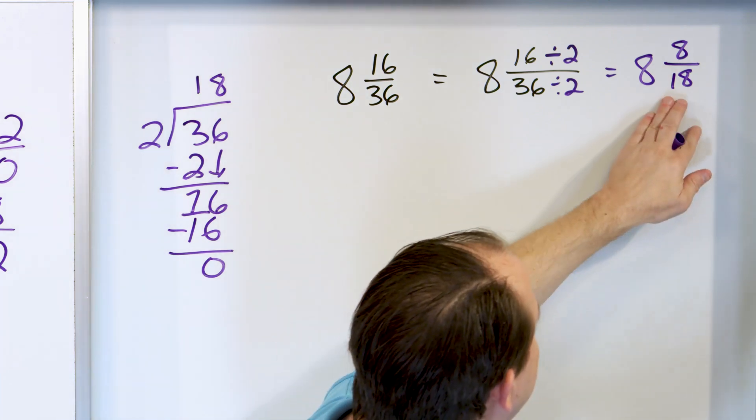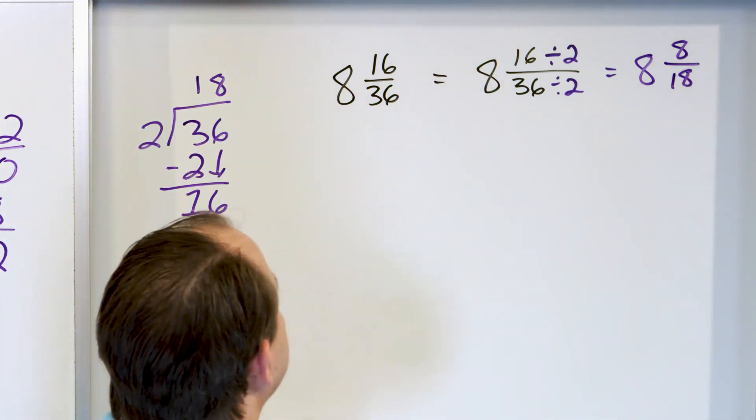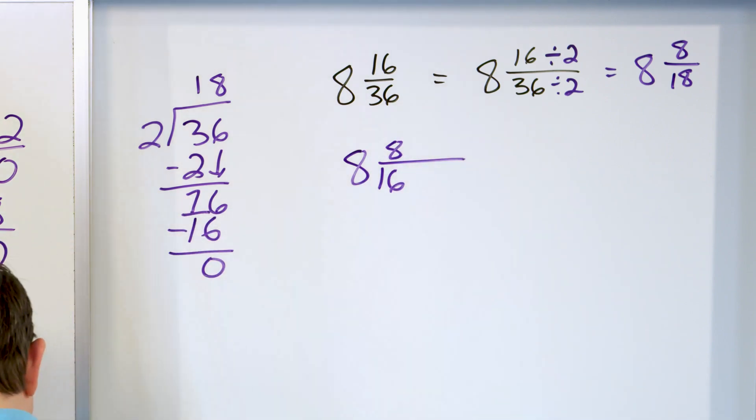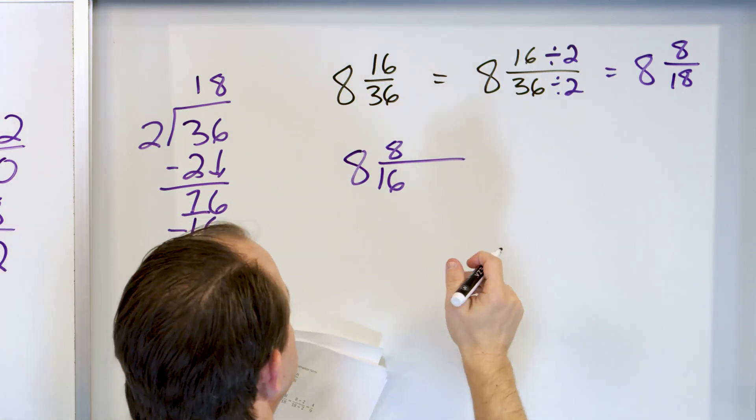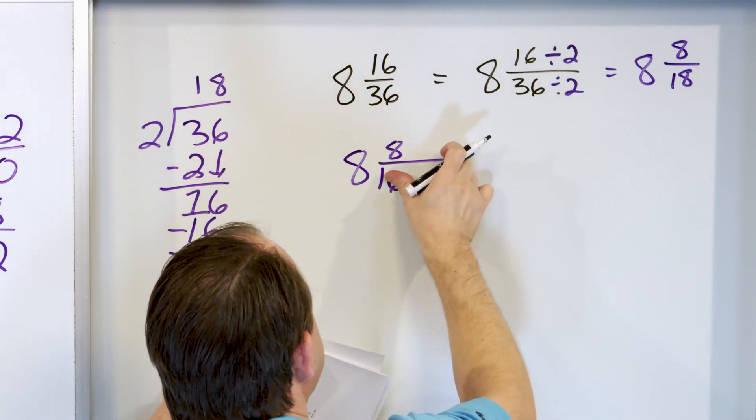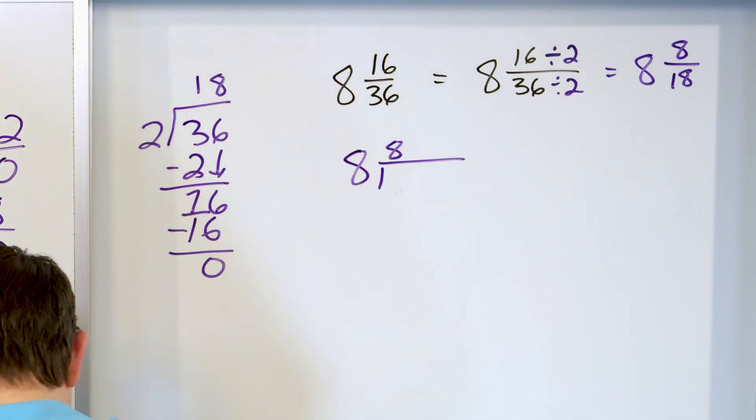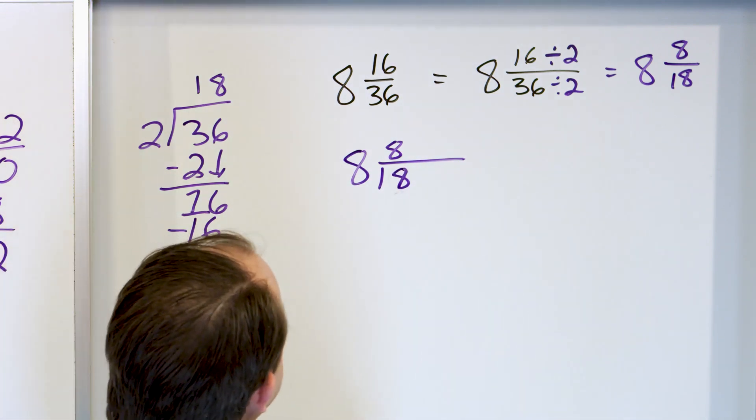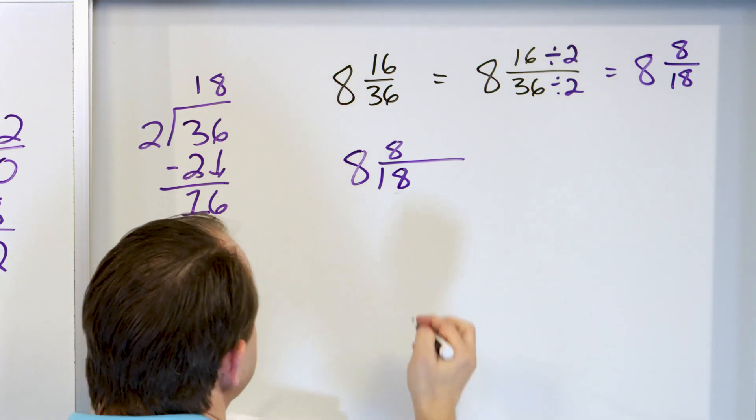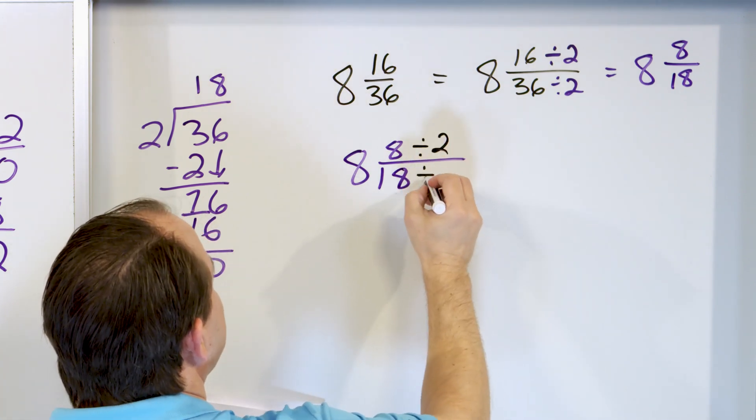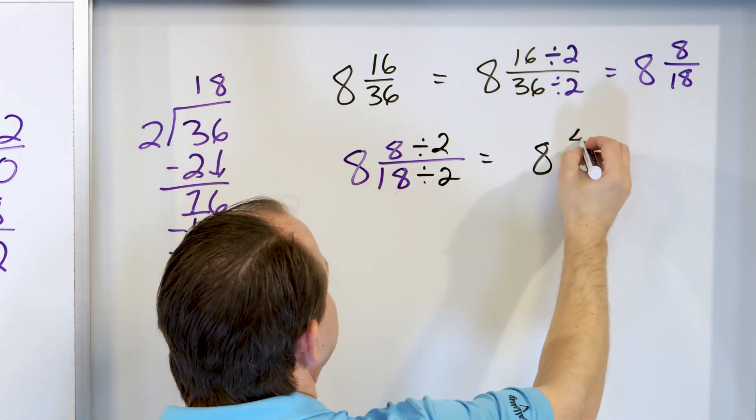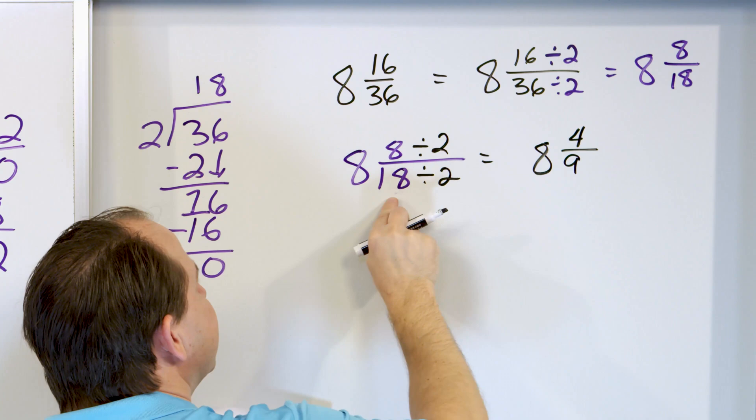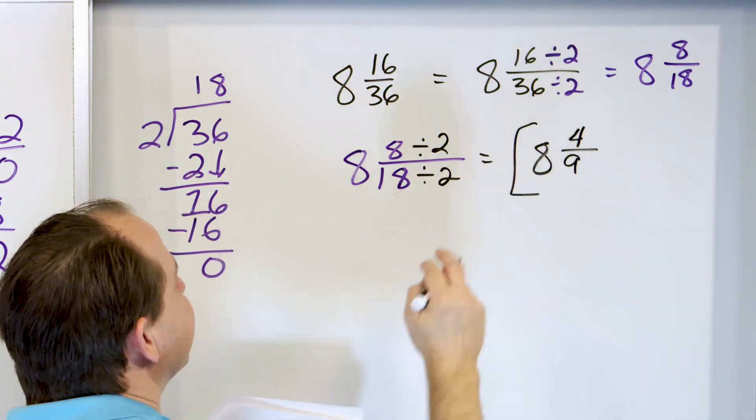Now I think, am I done? Well, no, I'm not done because these are also even numbers. So let's take 8 and 8/18ths. What can we divide them by? I can divide both by 2. So let's do that. Divide by 2, divide by 2. 8 divided by 2 is 4, and 18 divided by 2 is 9 because 9 times 2 is 18. So I get an answer of 8 and 4/9ths.